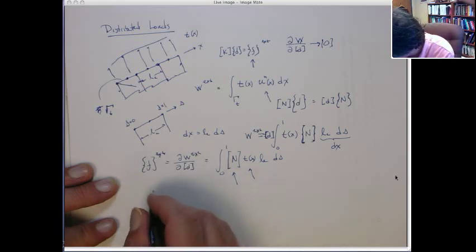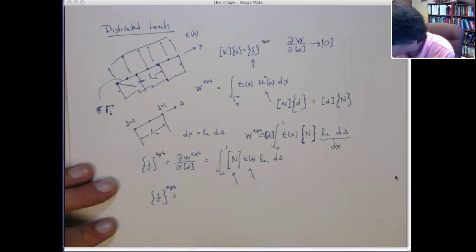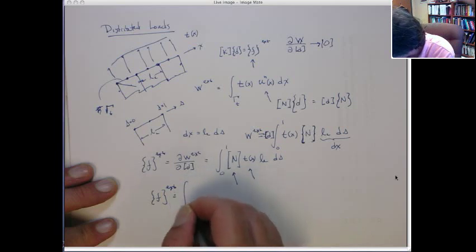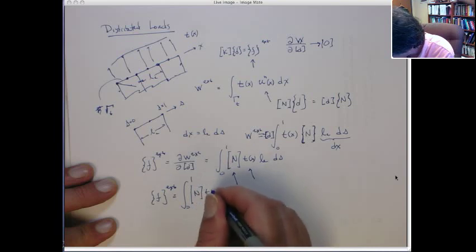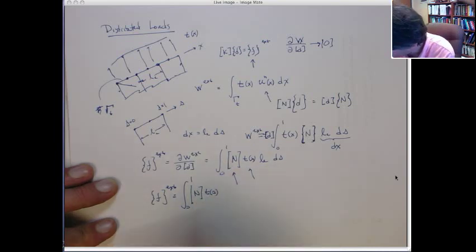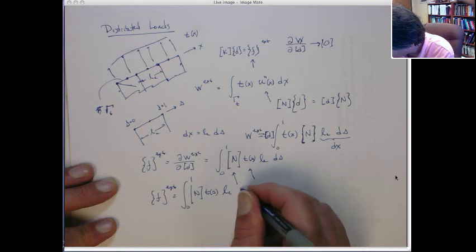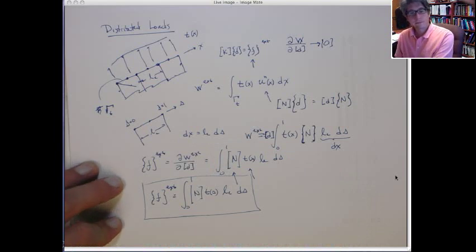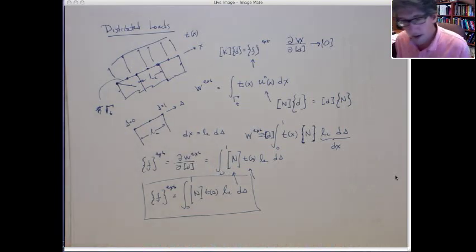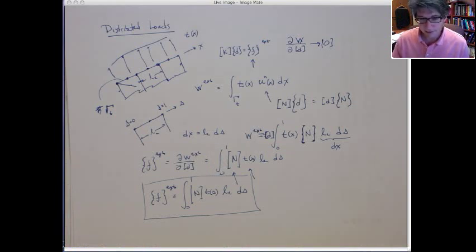So let me just rewrite this. The external force is equal to the integral 0 to 1 shape functions times the given traction, and actually that really should be in terms of S now, length of the edge, dS. Okay? That's what we're going to use, all right? And actually, maybe I'll pause the video here, and then I'll pick up and do an example in a second, okay?